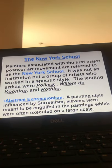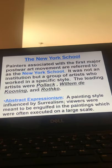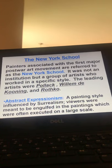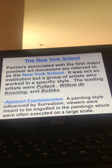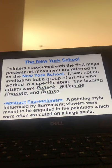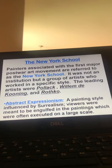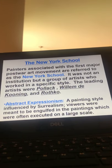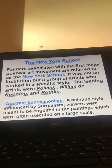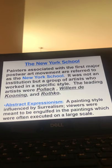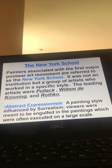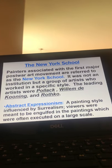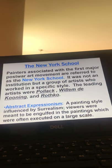Painters associated with the first major post-war art movement are referred to as the New York School — it wasn't an actual school, just a group of artists. The leading artists were Pollock, de Kooning, and Rothko, and they formed what is called Abstract Expressionism, a painting style influenced by Surrealism, meant to engulf the viewer in the paintings, which were often executed on a very large scale.